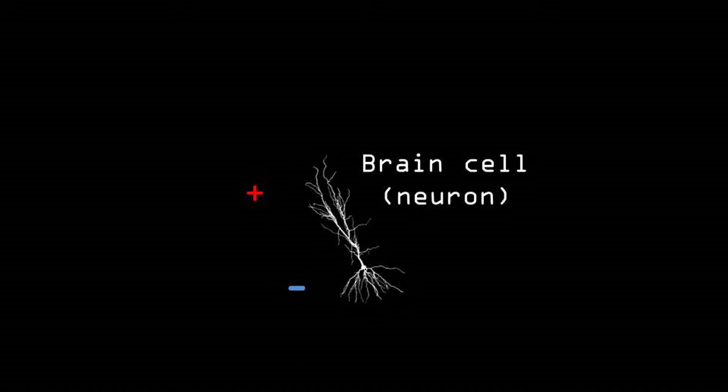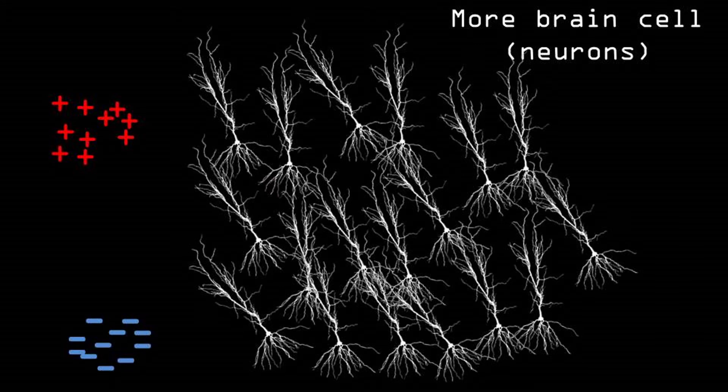The charge of a single neuron we cannot measure from outside of the head. The signal is just too small and it cannot travel through the skull. However, if there is a difference in charge of multiple neurons—let's say a hundred thousand or so—then we can pick up a signal from outside of the head.